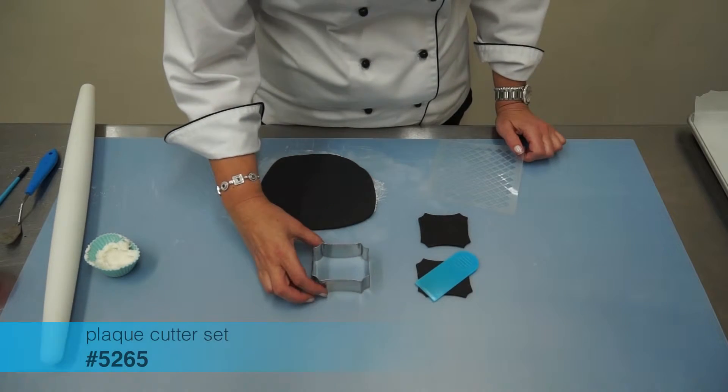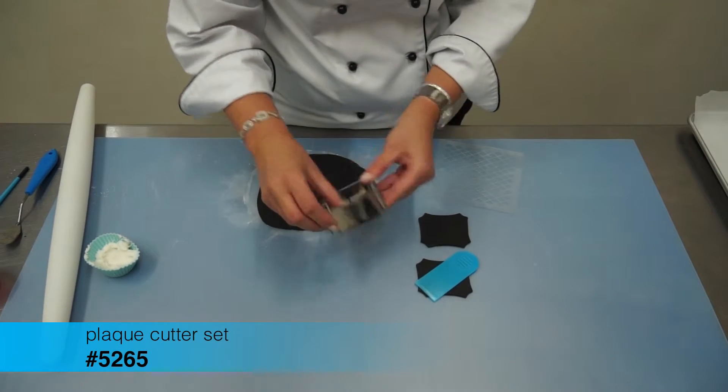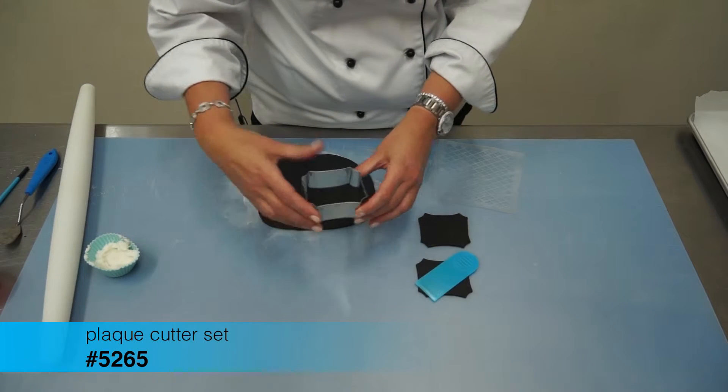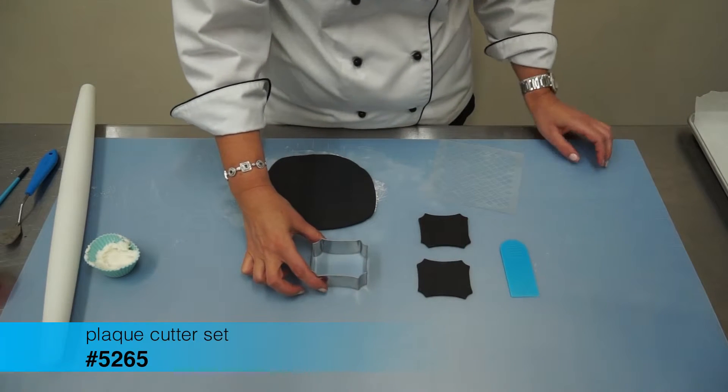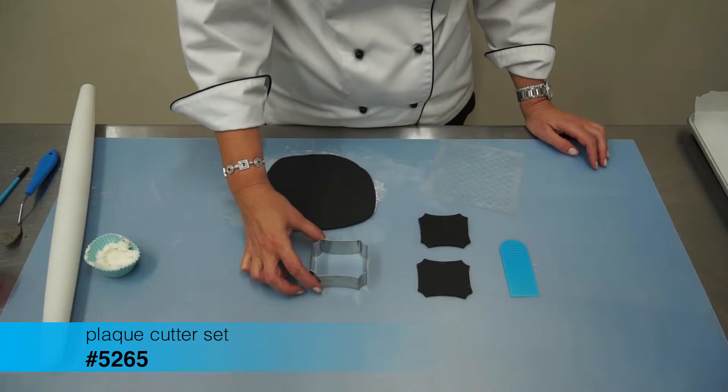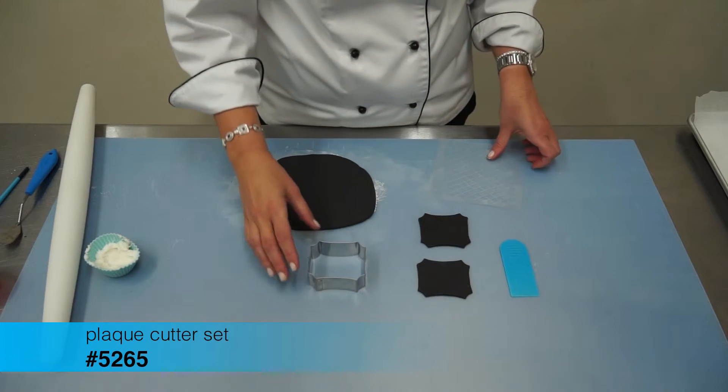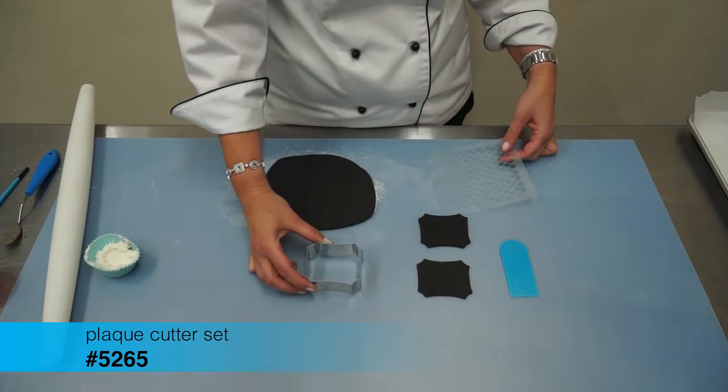Okay, so these are the plaque cutters. I love this shape. You could use them for cookies, for favors, you could use them as a plaque on a cake. Today I'm actually going to show you how to stencil.